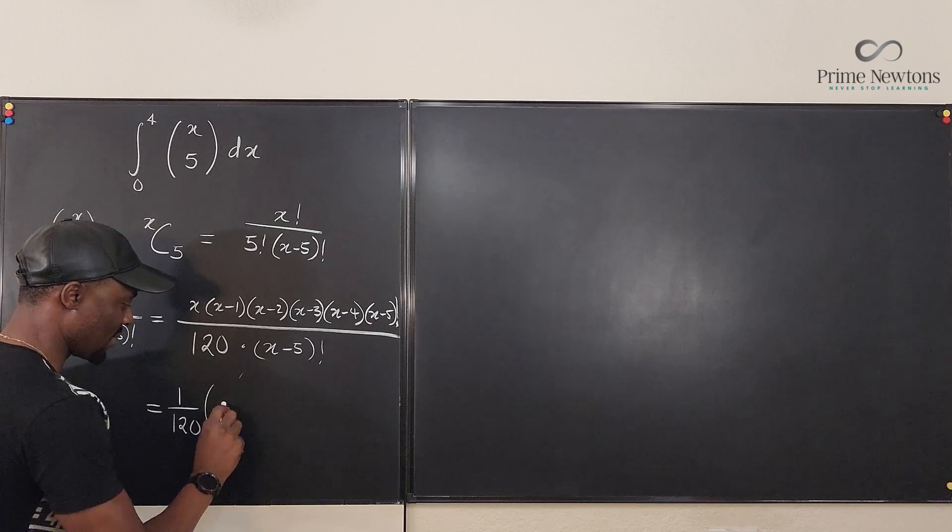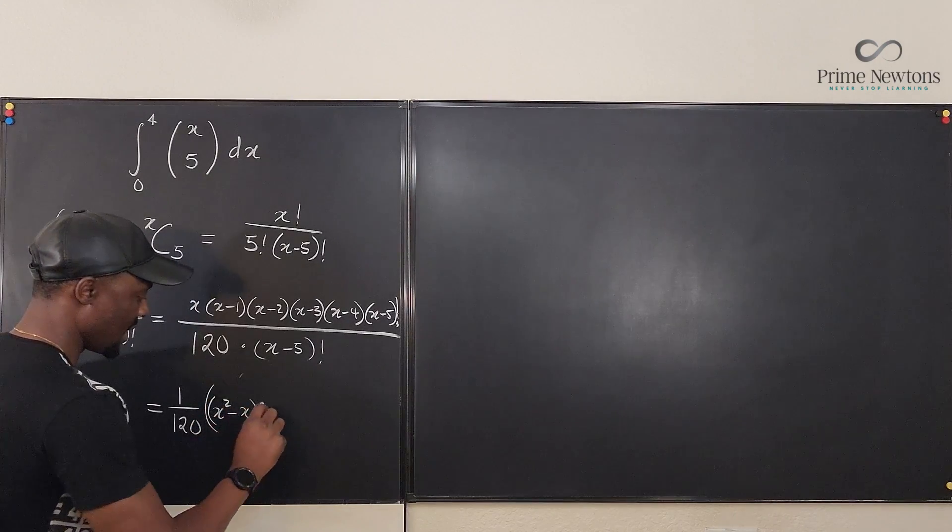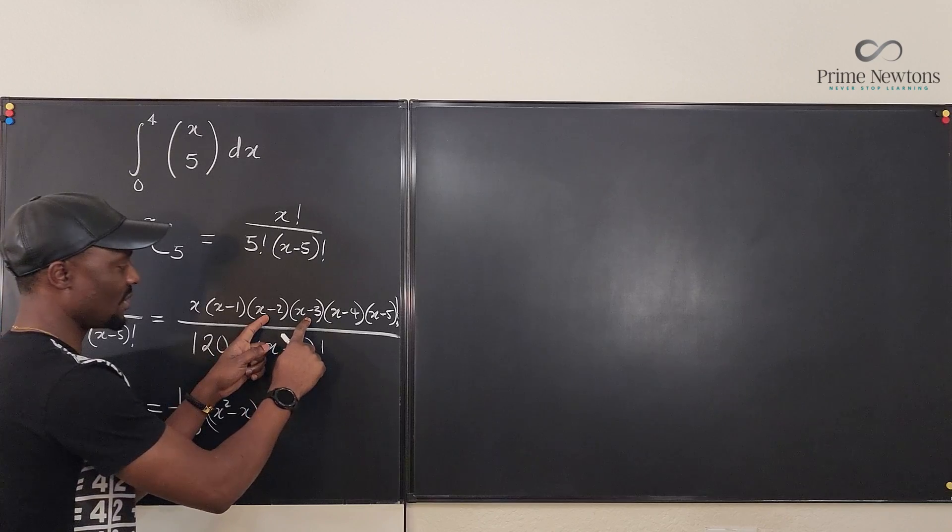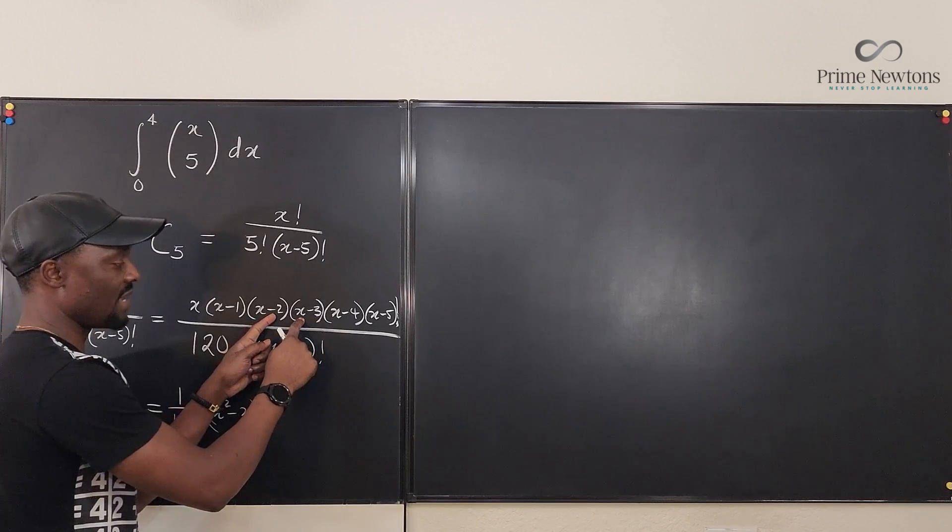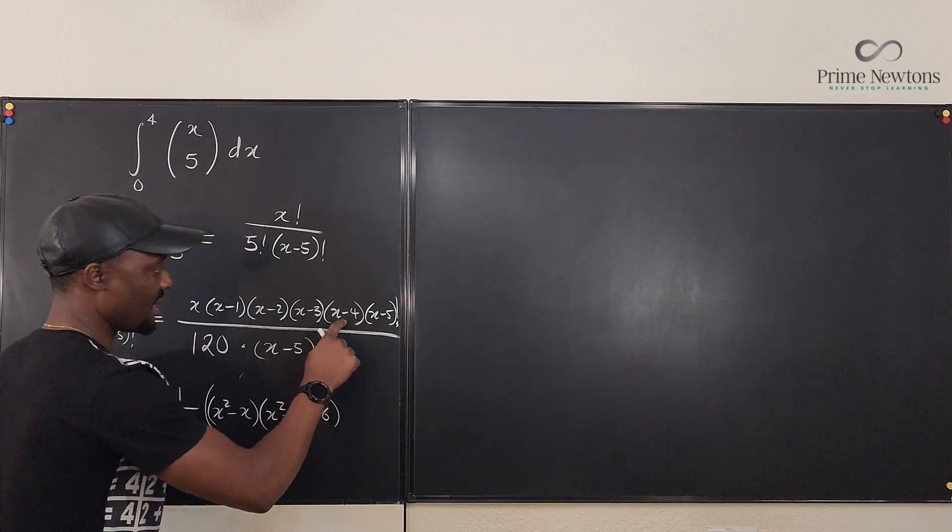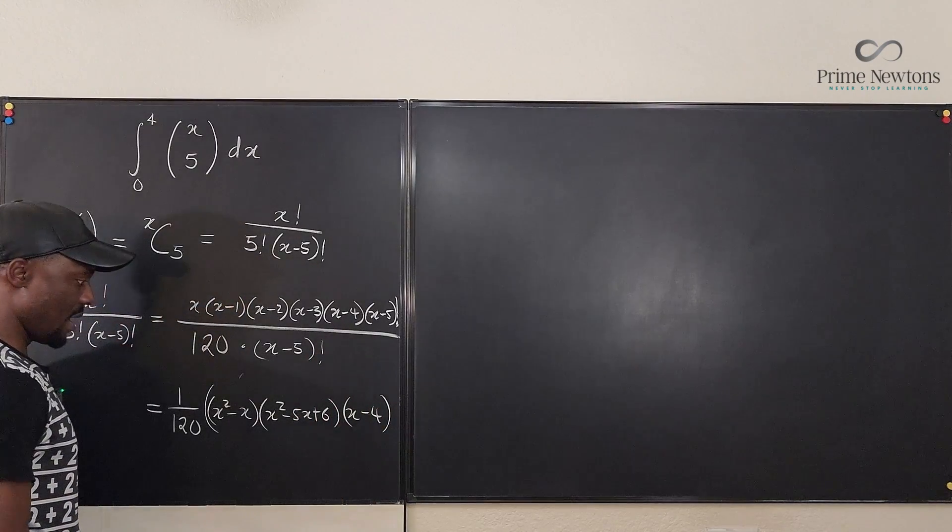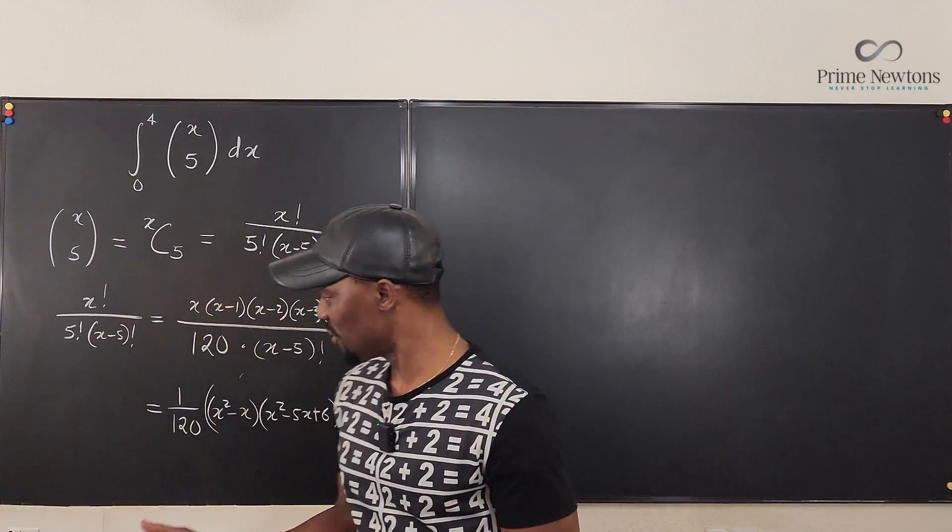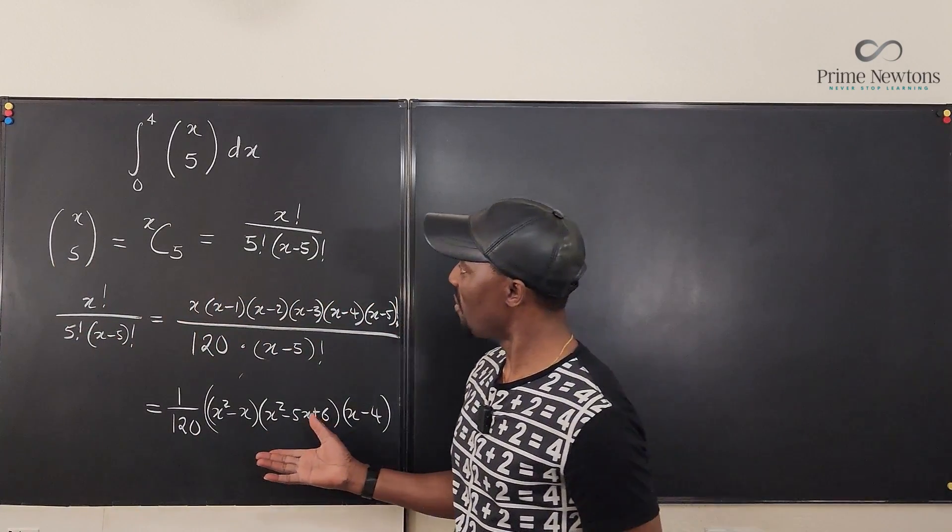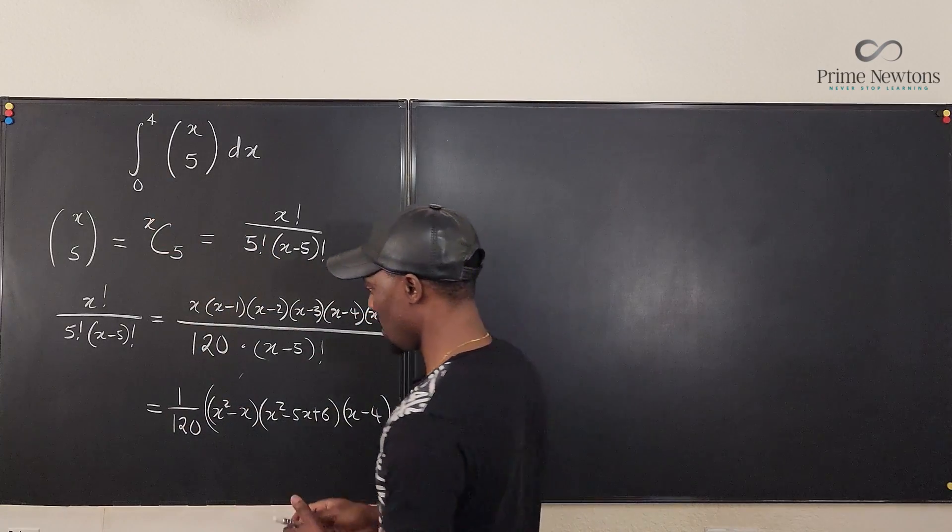So this is going to be x squared minus x. Okay, that's 1. And then I'm going to distribute this. It's going to be x squared minus 5x plus 6. x squared minus 5x plus 6. And then there's 1 here, x minus 4. Okay. And that's it. So this is what you're supposed to integrate. We're supposed to go back here and plug it in here when we're done. So let's keep working.